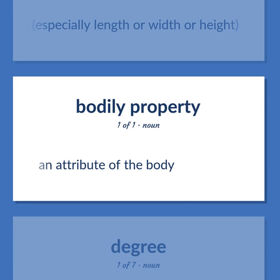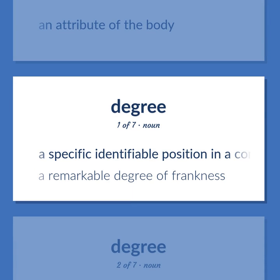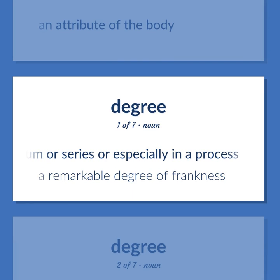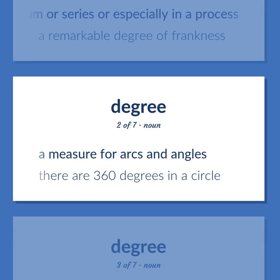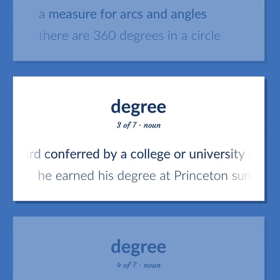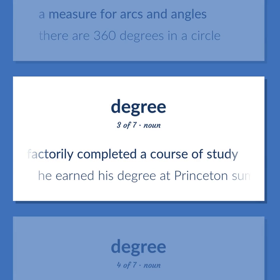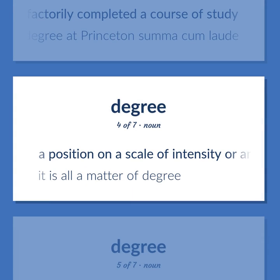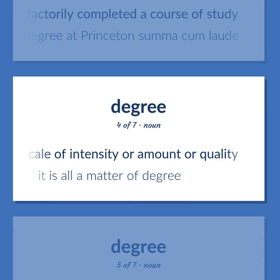Degree. An attribute of the body. A specific identifiable position in a continuum or series, especially in a process. Example: A remarkable degree of frankness. A measure for arcs and angles. Example: There are 360 degrees in a circle. An award conferred by a college or university signifying that the recipient has satisfactorily completed a course of study. Example: He earned his degree at Princeton summa cum laude. A position on a scale of intensity, amount, or quality. Example: It is all a matter of degree.